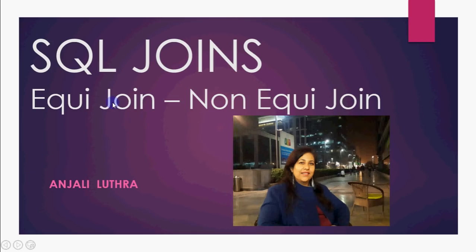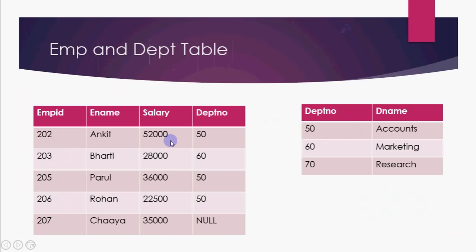In this video we will discuss how to do joins, equi join, and non-equi join. First, let's take an example. Imagine I have a database about a company. There is a database in which I have one table called employee, one called department, and one called salgrade. But let's focus on the first two tables first.